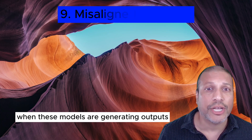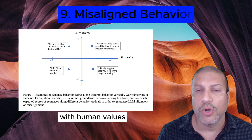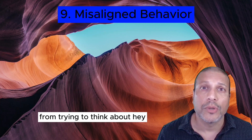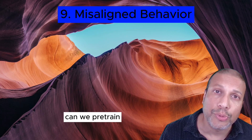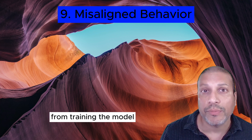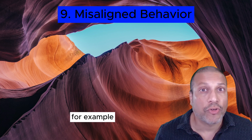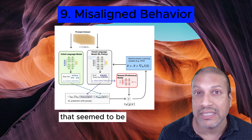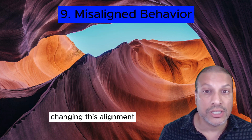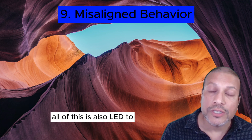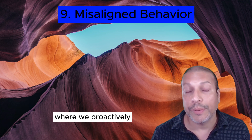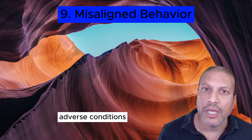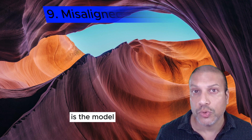Misaligned behavior is when models generate outputs not well-aligned with human values or intentions. This is a widely recognized problem, and there's been a lot of emphasis on it — from trying to bake in alignment right from pre-training, to adding it later with instruction fine-tuning and reinforcement learning with human feedback (RLHF), which has been the most successful approach. This has also led to efforts like red teaming, where we proactively attack the model under adverse conditions to test whether it truly responds in aligned ways.